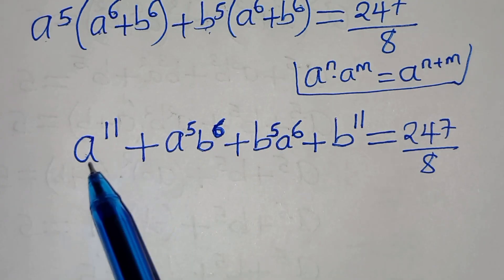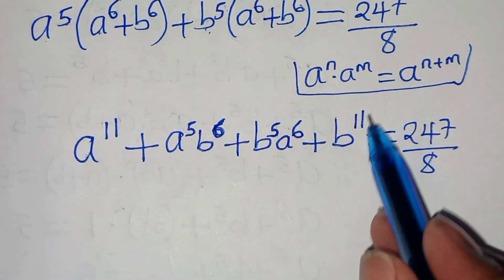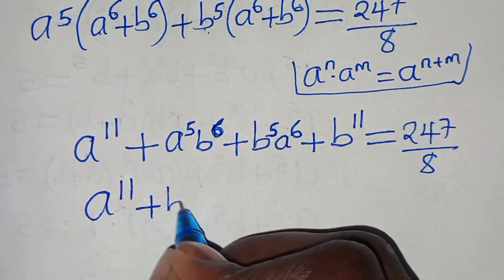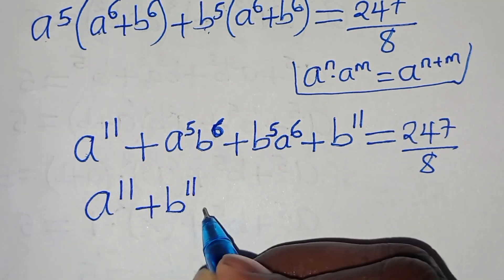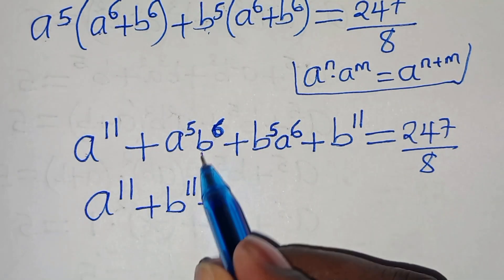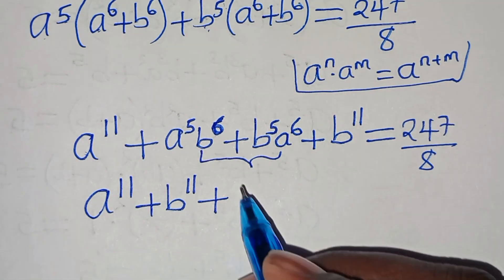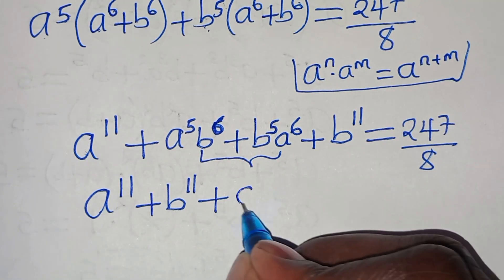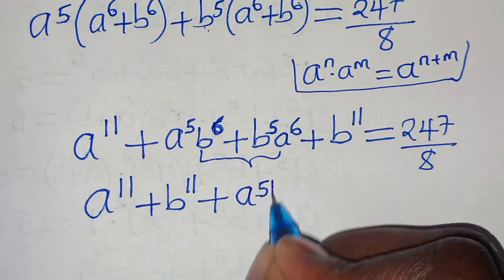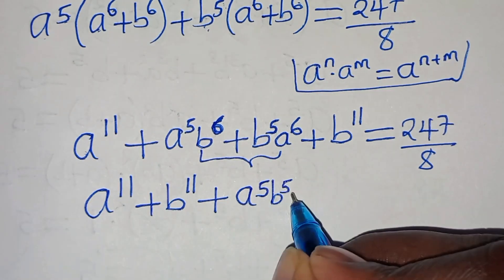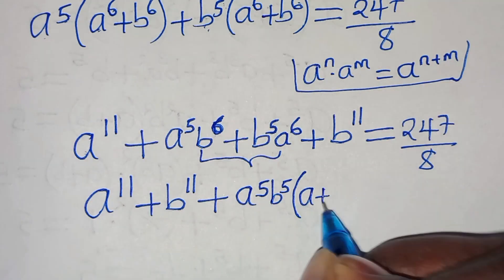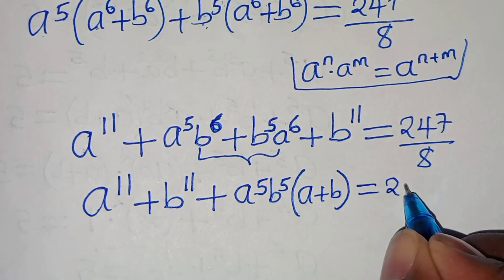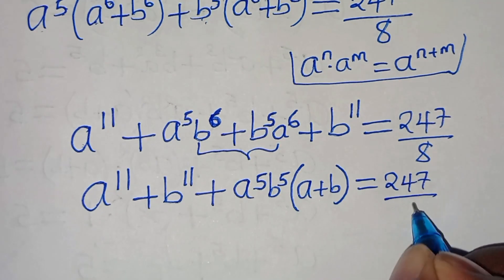We have a to the power of eleven and b to the power of eleven in the expansion. The middle terms — a to the fifth times b to the sixth and b to the fifth times a to the sixth — we can factor out a to the fifth b to the fifth which is common, giving a plus b. So we have a to the power of eleven plus b to the power of eleven, plus ab to the power of five times a plus b, equals two hundred forty-seven over eight.